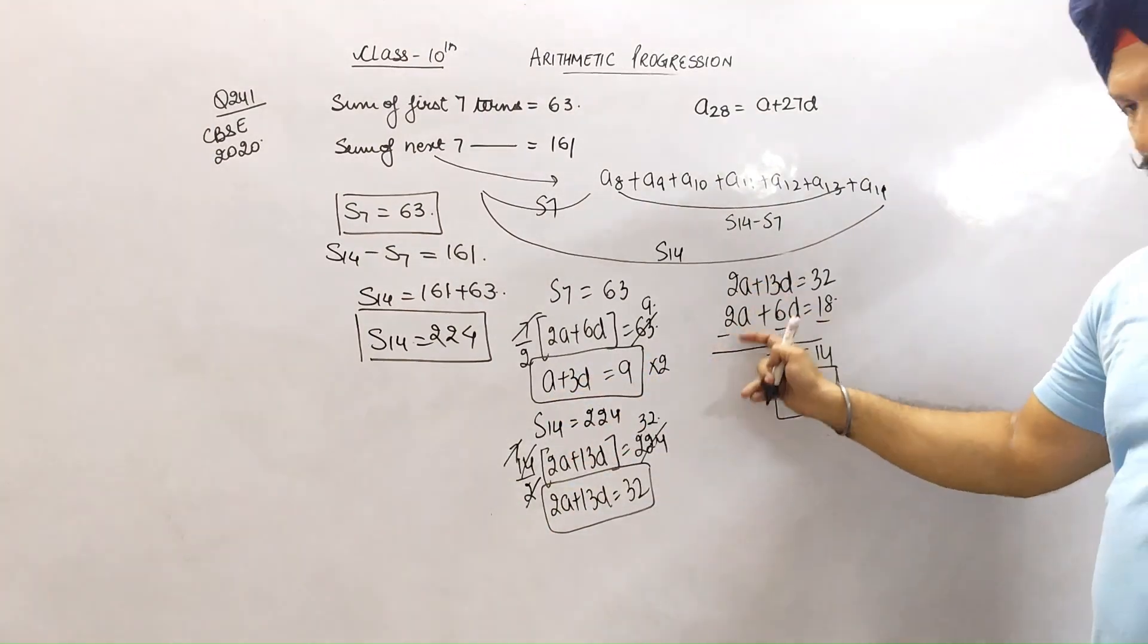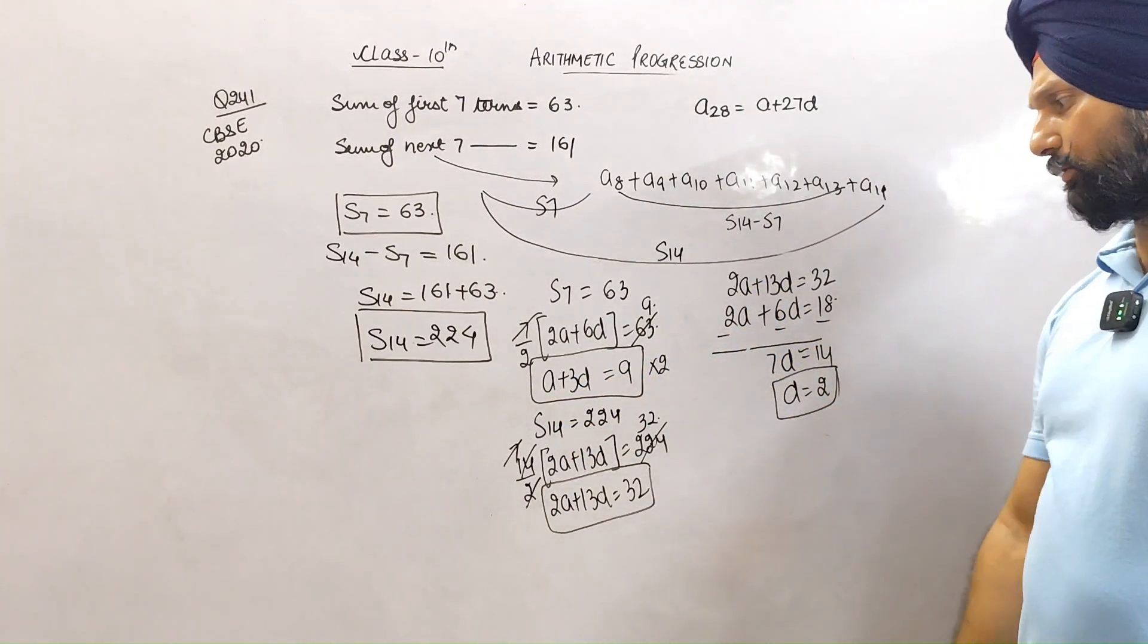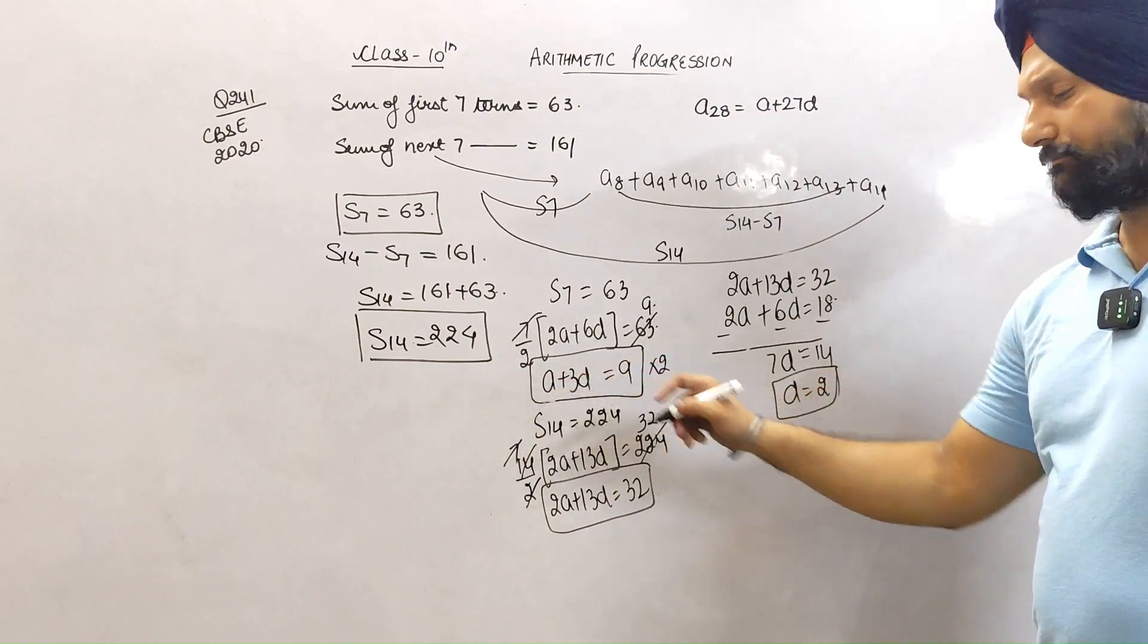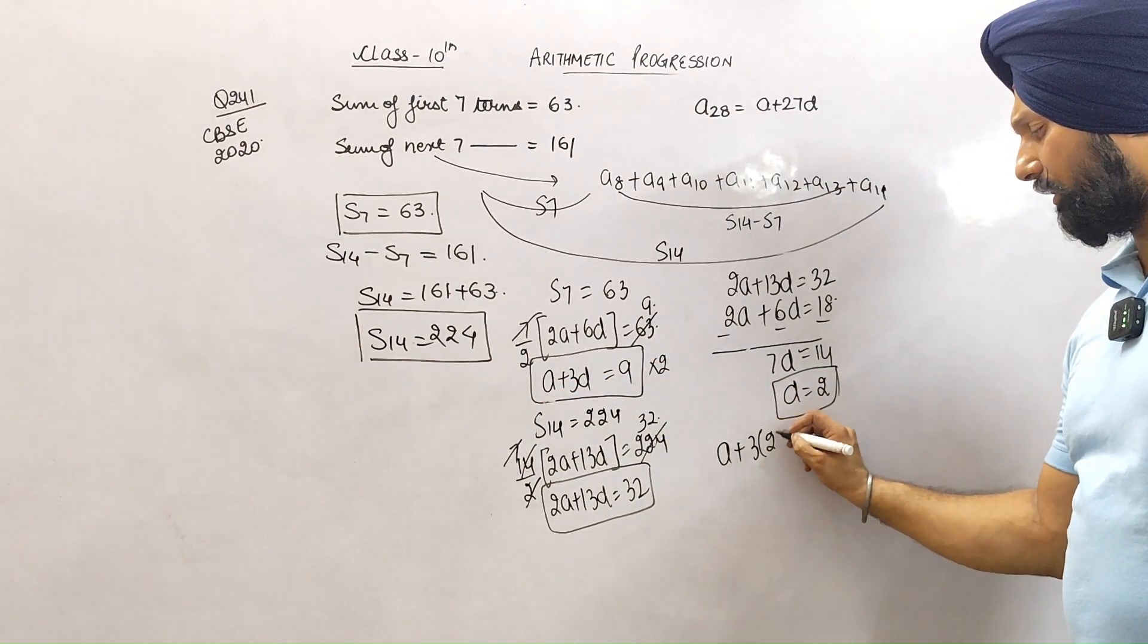Using elimination method, 2a cancels. Now let's substitute. a + 3(2) = 9. 3 times 2 is 6, so a + 6 = 9, which means a = 3.